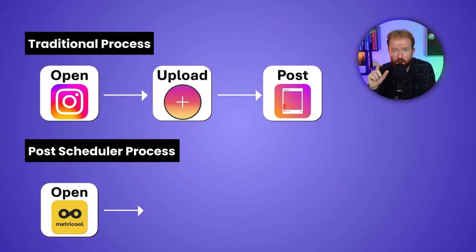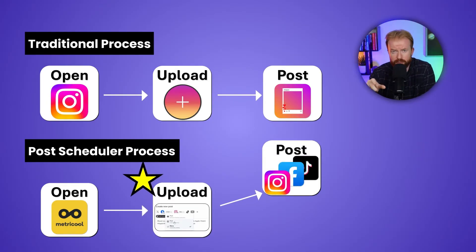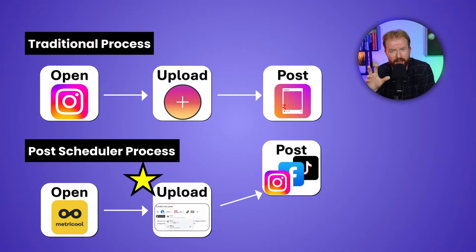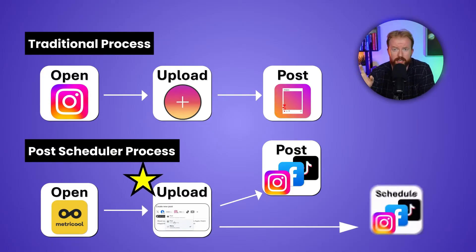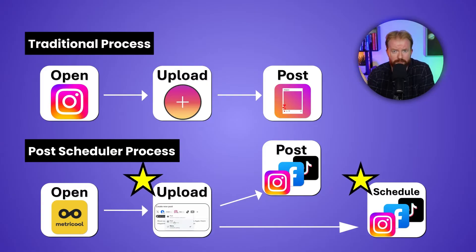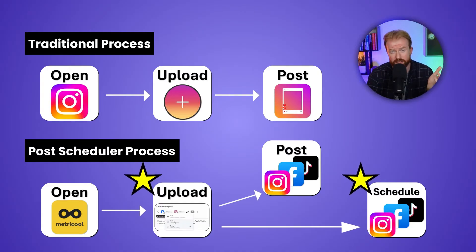A post scheduler allows you to do two things. First, you go to this third-party site — let's use Metricool for example — and select all the different social media platforms you want that video to show up on: Instagram reels, Facebook, and maybe YouTube Shorts. From this one centralized spot you can post all of them at once. Or, what I like to do, is select a future date and time you want that post to be released, and without even touching anything, it's posted on that platform. It saves you time by posting from one centralized spot and by not having to log in every time you want something posted.